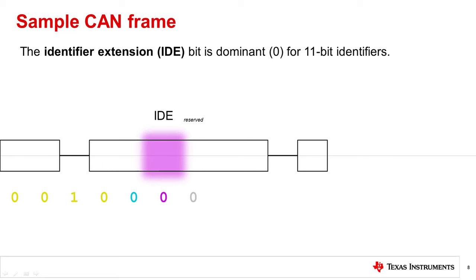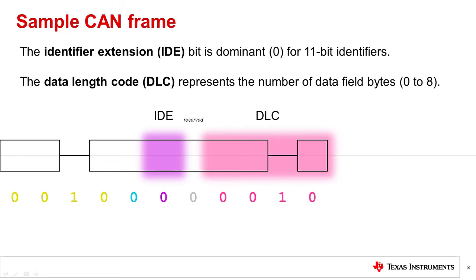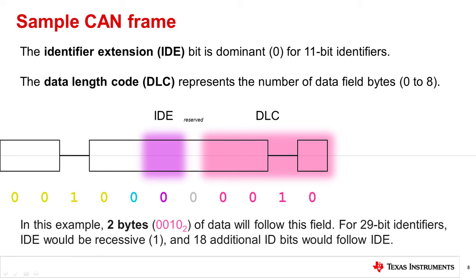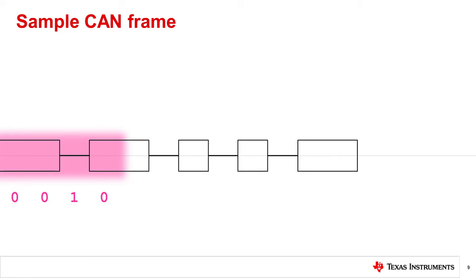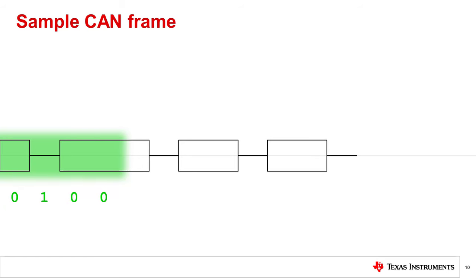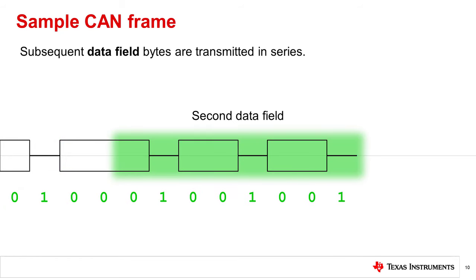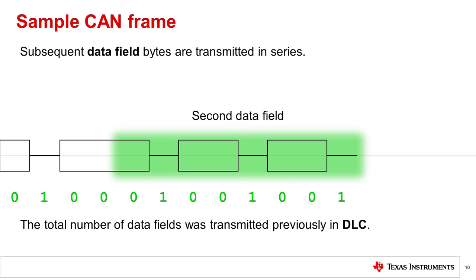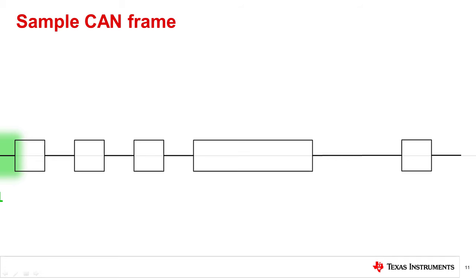The last four bits of the control field are the data length code, or DLC, which indicate how many bytes of data will be transmitted in this message. This particular DLC indicates that two bytes of data will be transmitted. The number indicated in the DLC must be between 0 and 8 for traditional CAN, as the maximum number of bytes that can be transmitted in one frame is 8 bytes. Remote transmission requests will not have any data, so this field will be 0. The first byte of data is transmitted immediately following the data length code. Bytes transmitted via CAN are transmitted most significant bit first. Subsequent data fields are transmitted in series, and earlier in this example we indicated that there would be two total bytes of data transmitted.